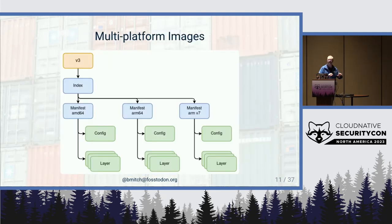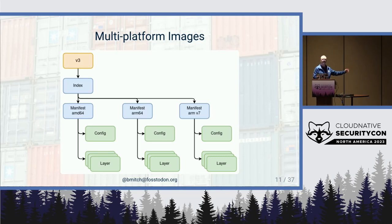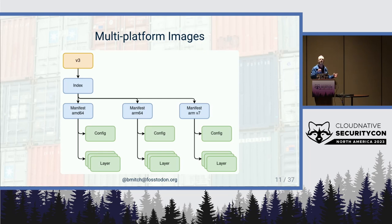Graphically, we now have a tag pointing to the multi-platform manifest — in OCI land that's called an index. The index points to multiple manifests for each platform, and those point to each of the configs and layers. So we've built this nice big graph.